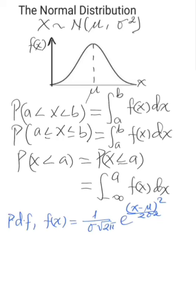The probability density function f(x) of the normal distribution that is to be integrated to obtain probability values is: 1 over sigma times the square root of 2π, times e to the power of negative (x minus mu) squared divided by 2 sigma squared. You can see that it is quite a complicated function and it will not be easy to integrate analytically. Hence, to do calculations we have to use the standard normal distribution.